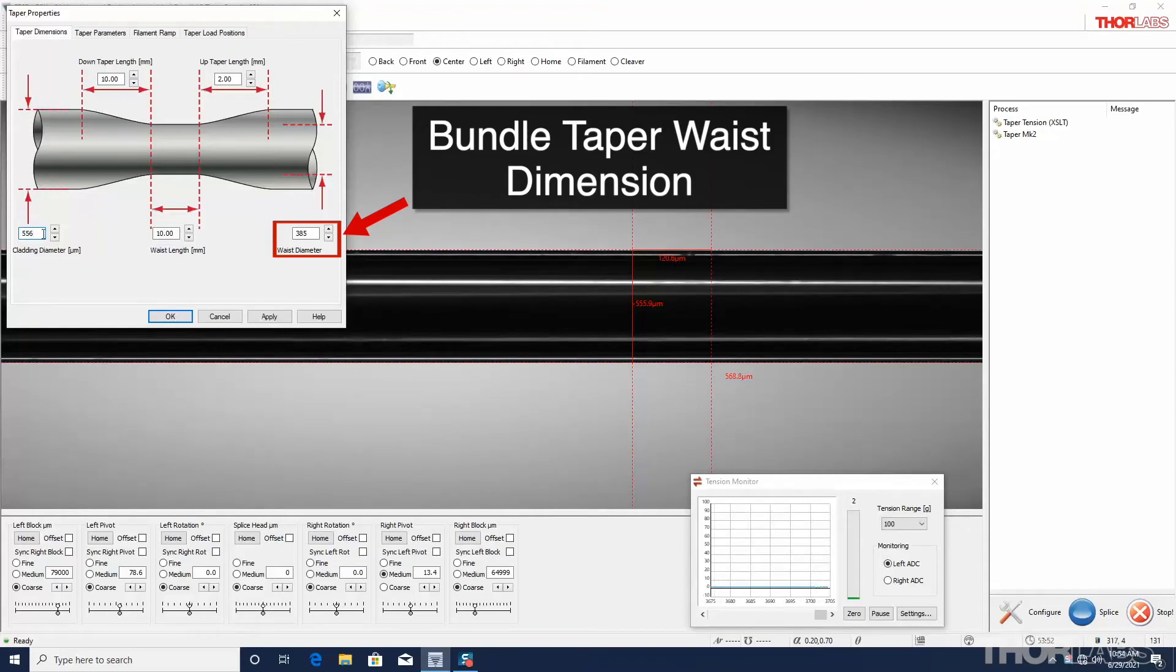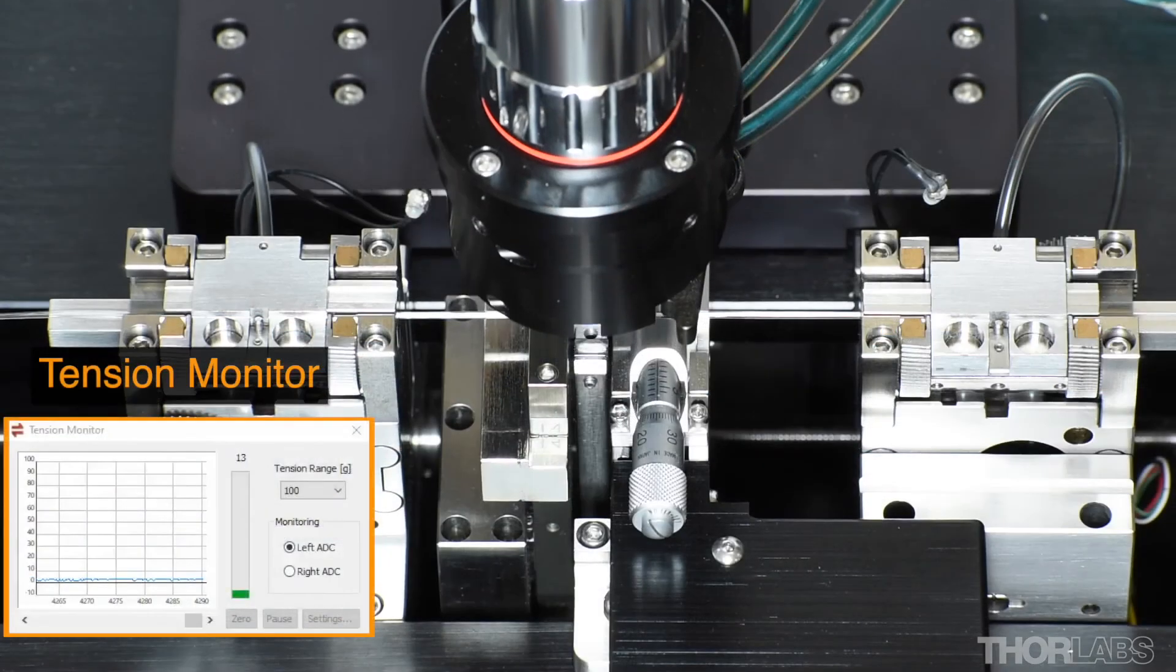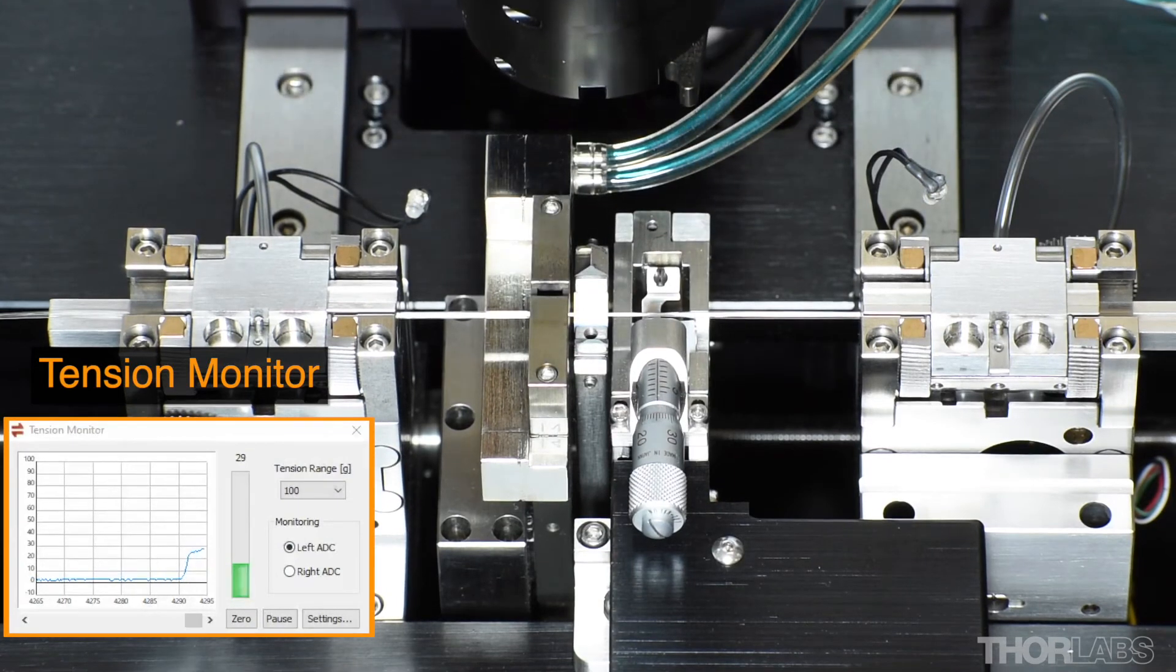The taper should be drawn while the vacuum is attached to the capillary. This promotes a more even collapse of the capillary during the taper process. After the fiber holding blocks have been moved to the start positions, the GPX can apply a predetermined tension, and the taper will be executed without further user intervention.